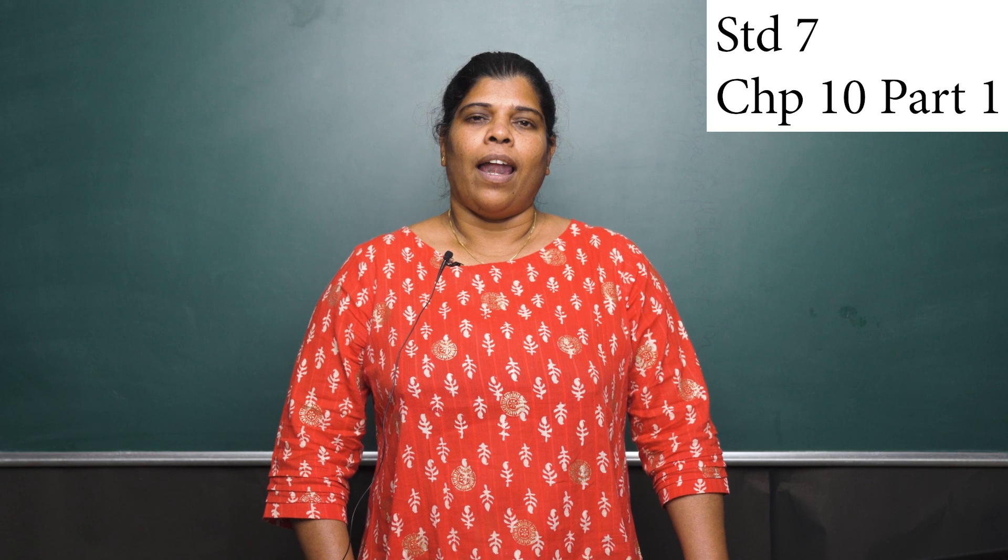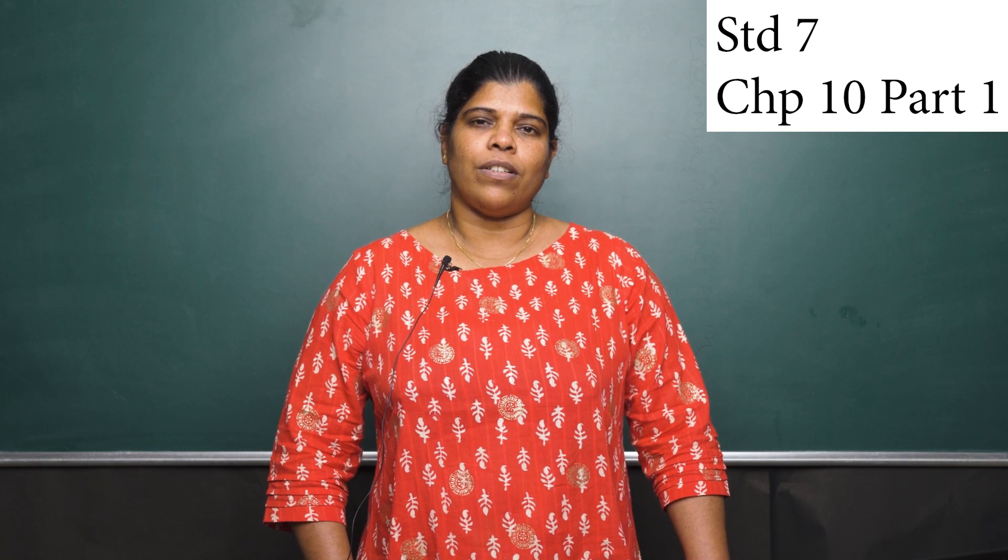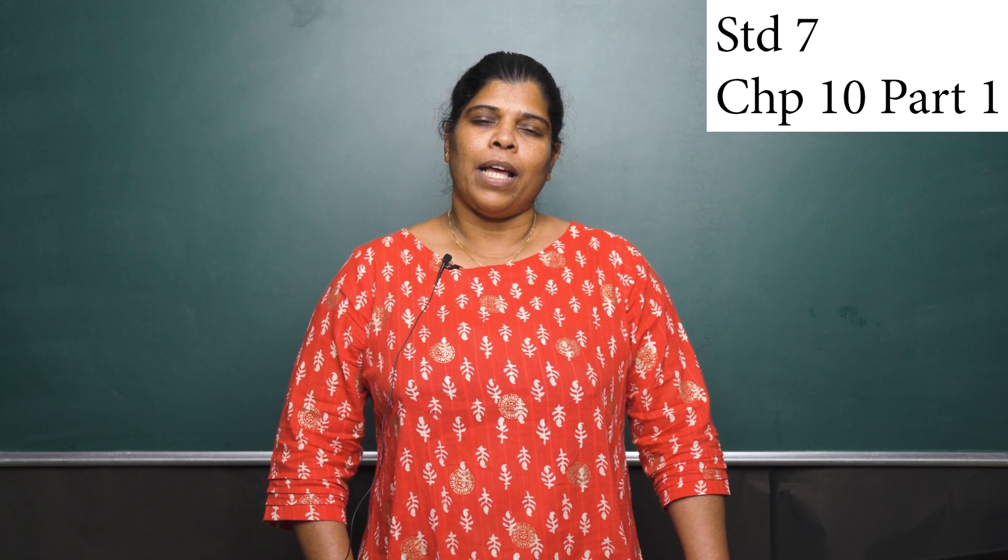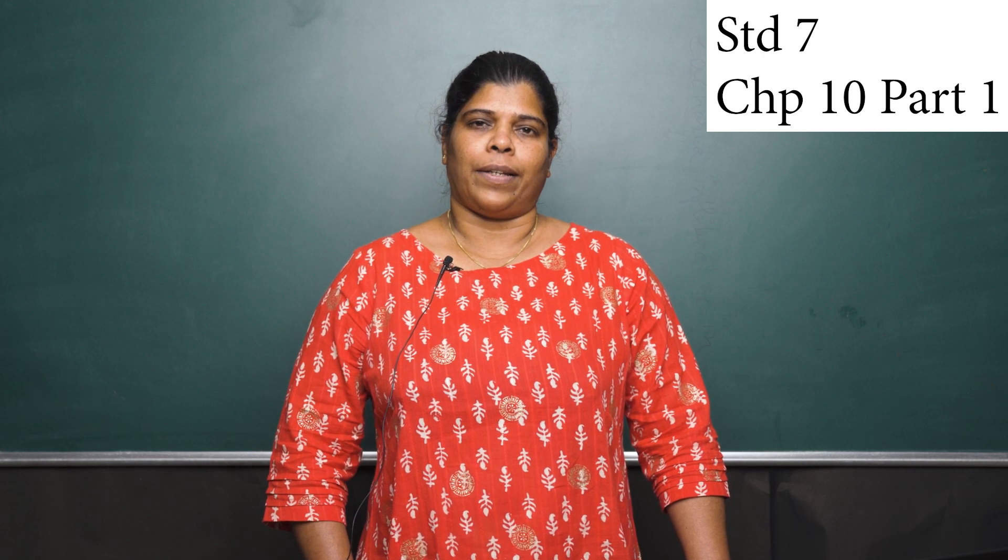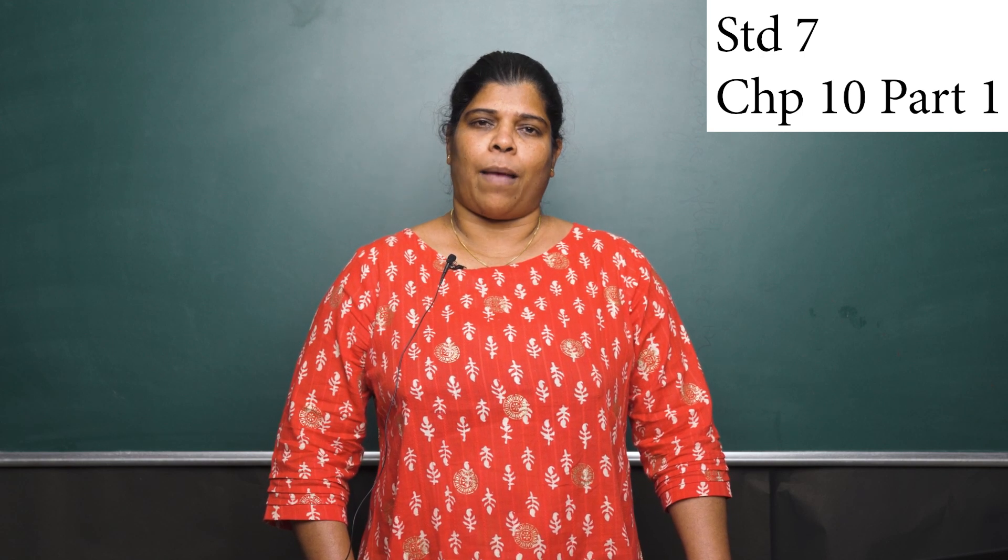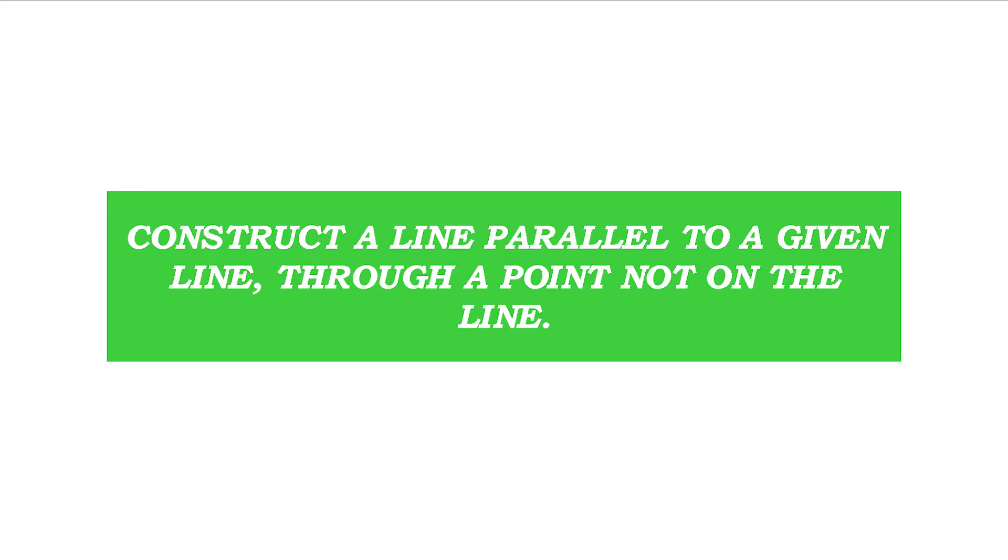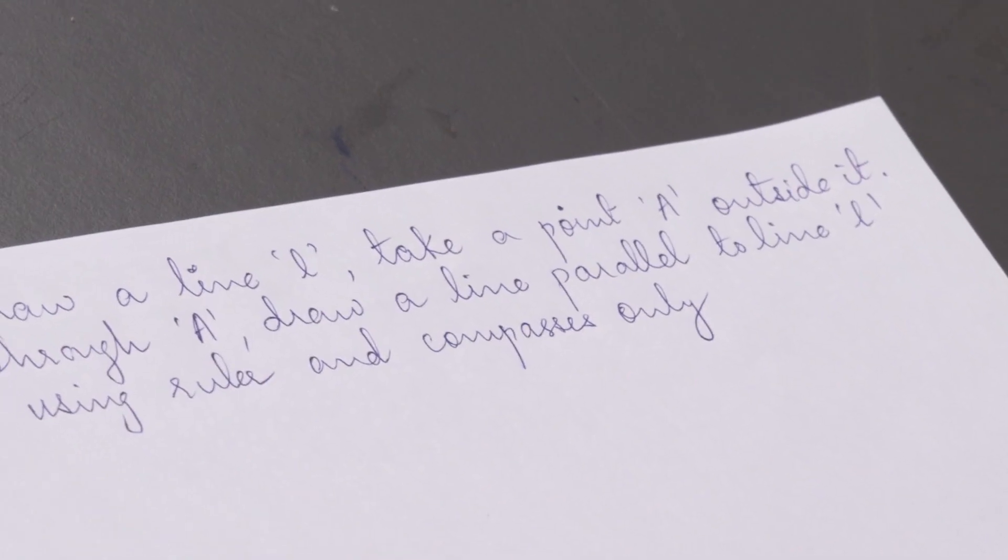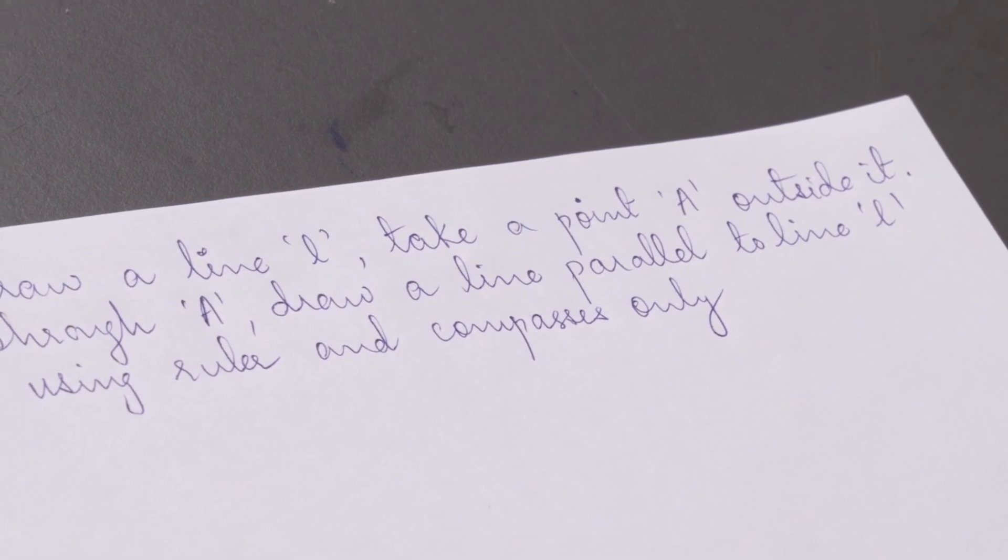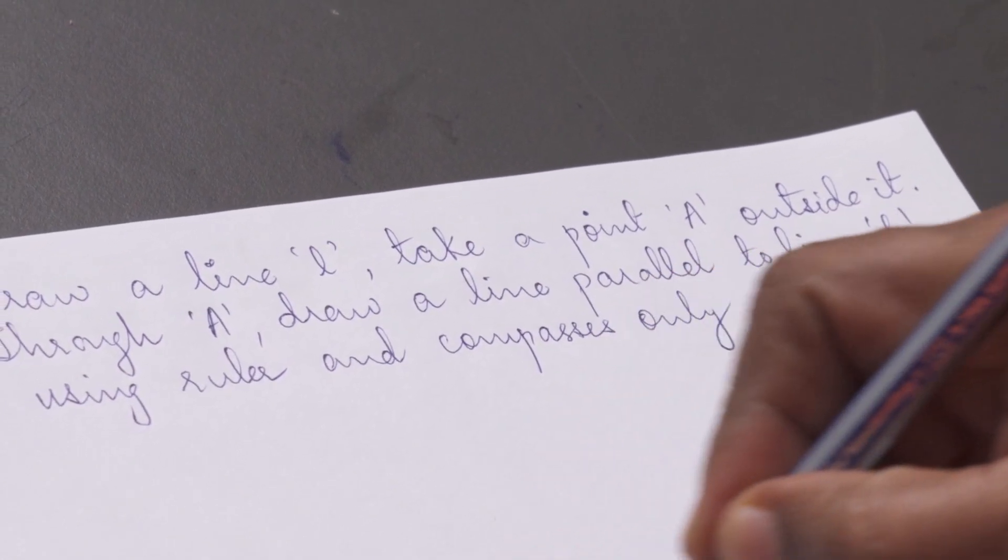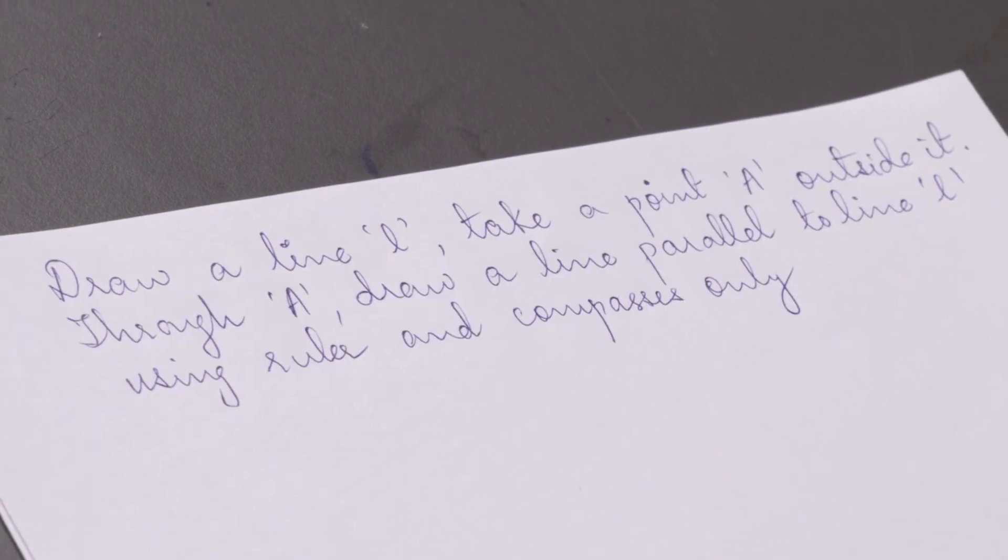Students, let us proceed with the construction of a line parallel to a given line, to a point not on the line. We shall take an example now. Draw line L, take a point A outside it, through A, draw a line parallel to line L using ruler and compasses only.